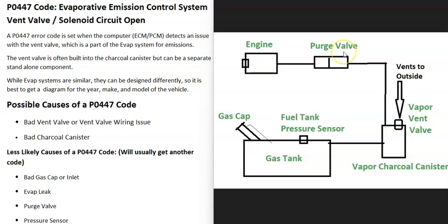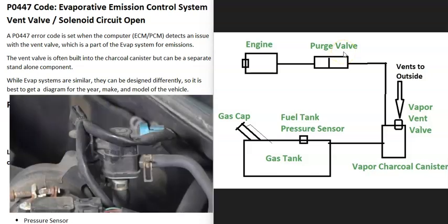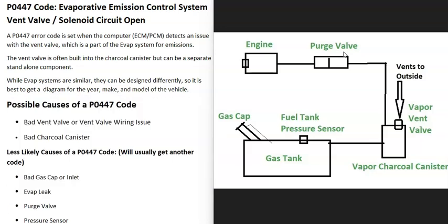The gas vapors leave the charcoal canister and go up to the engine compartment, where there's another valve called the purge valve. The purge valve stays shut when the engine is not running, but when the engine is running, at some point the computer is going to send it a signal to open, and then all the gas vapors go into the engine to be burnt away. That's a basic overview of what's going on inside an EVAP system.